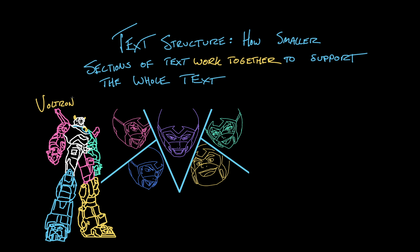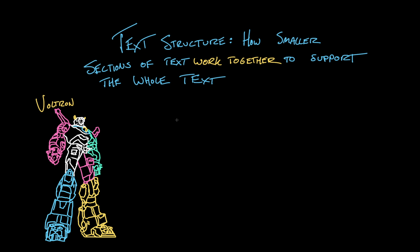In order to walk, or pick up objects, or fight space monsters the size of battleships, all the disparate parts of the robot have to function together. Well, texts work much the same way. Each portion of the text, from the section level down to more granular divisions like individual paragraphs or sentences, is trying to serve the broader point of the text.